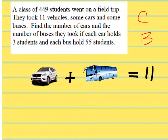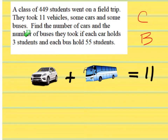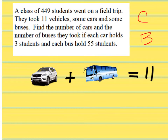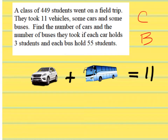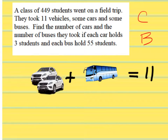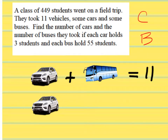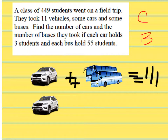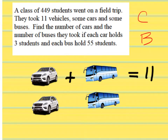Now we have 449 students from up here — 449 students went on the field trip. We have already taken care of 11 vehicles, cars and buses. We need to find the number of cars and buses if each car holds 3 students and each bus holds 55 students. We know that they took 449 students, so in our next equation we are going to come up with the number of students in each vehicle.